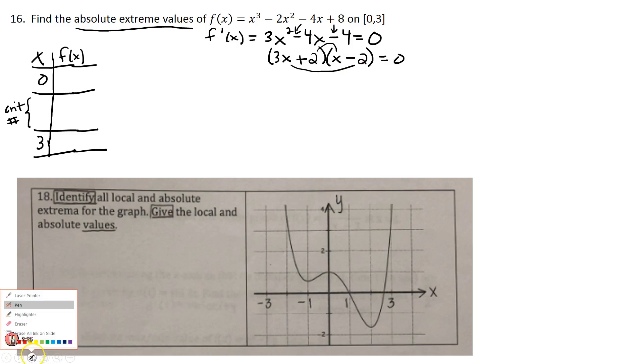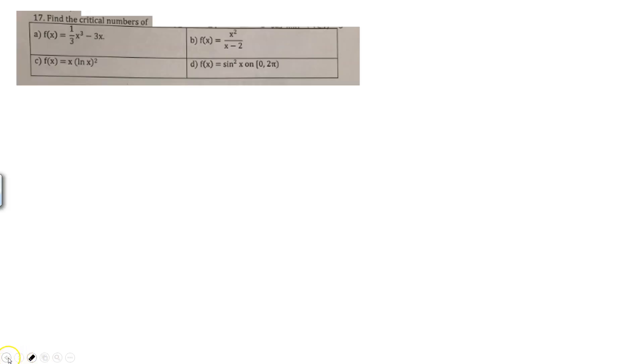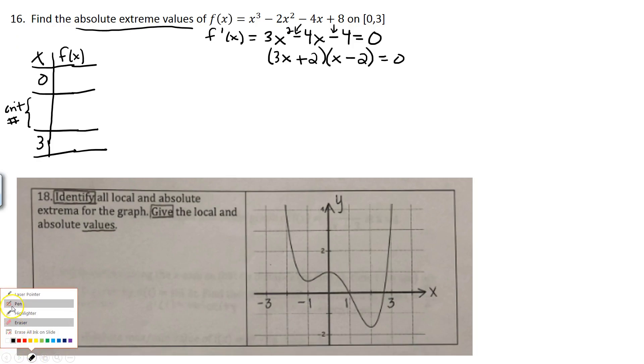Set equal to 0 and now we go to solve. We get either 3x plus 2 is 0 or x minus 2 is 0. 3x plus 2 being equal to 0 makes x equal to negative 2 thirds, and x minus 2 equals 0 makes x equal to 2.